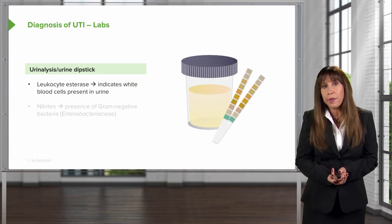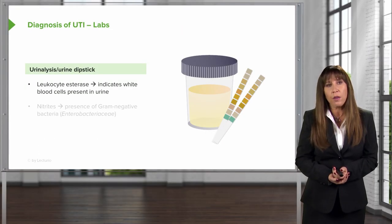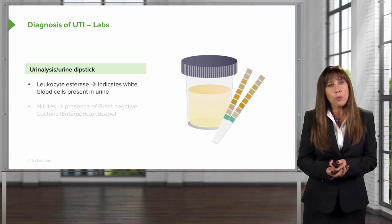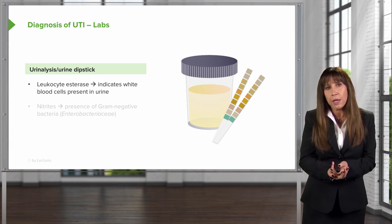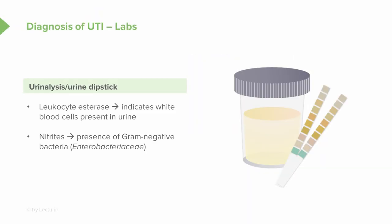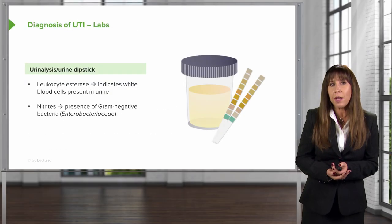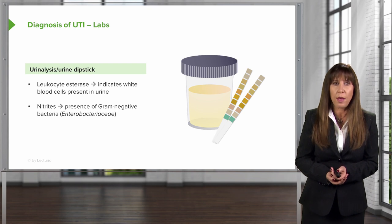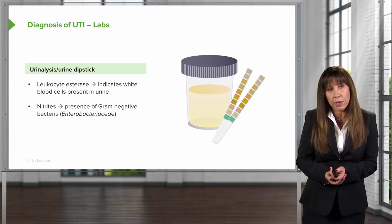Laboratories are also helpful in the diagnosis of UTI. Looking at our urinalysis or urine dipstick, the presence of leukocyte esterase indicates white blood cells in the urine. The presence of nitrites tells us that gram-negative bacteria, such as the Enterobacteriaceae, are present. Be careful, because Staph and Enterococcus do not reduce nitrates to nitrite, so we may miss those on a urinary dipstick alone.